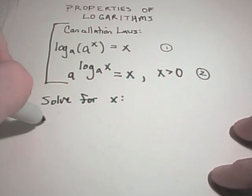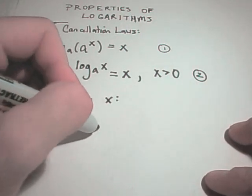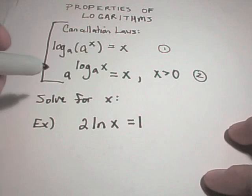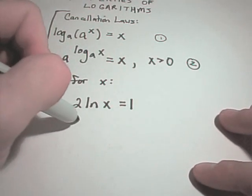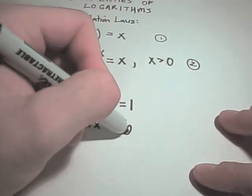So, a basic one here, suppose we had the equation 2ln of x equal to 1 and we're trying to figure out an exact value here. First thing you'll do is simply divide both sides by 2 and we'll get ln of x equals 1 half.